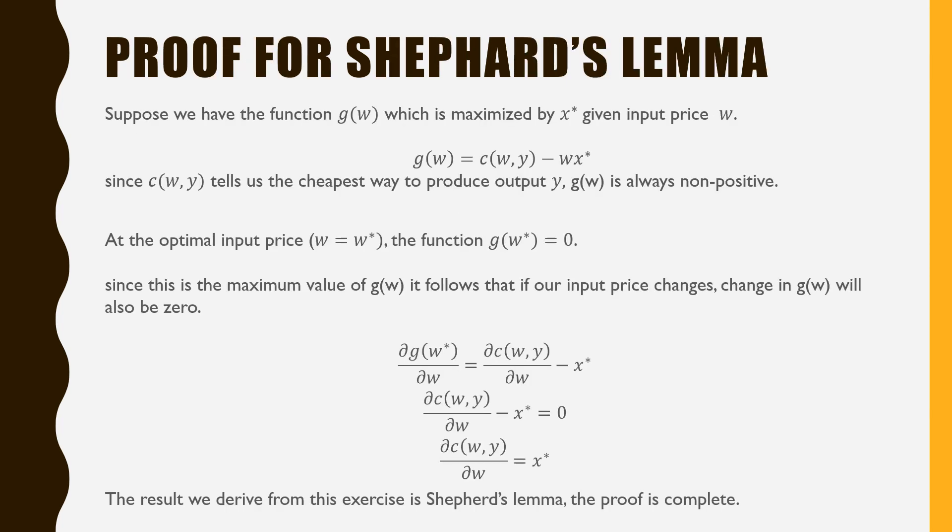To prove Shephard's Lemma, suppose we have the function g of w which is maximized by x star given input price w. Since our cost function tells us the cheapest way to produce output y, g of w is always non-positive. At the optimal input price, g of w is equal to 0.